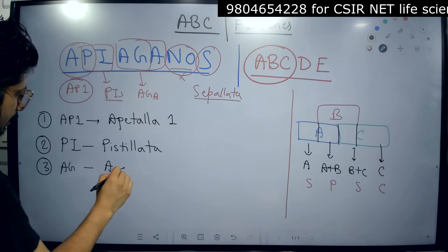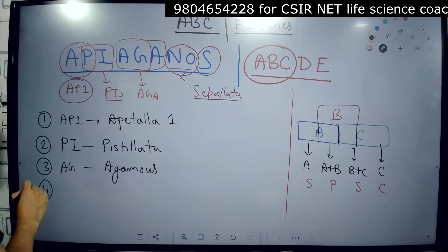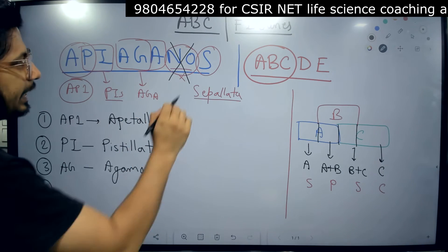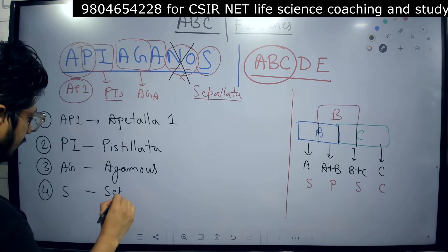The third one that we have is AG, that is Agamos gene. And the last one, the fourth one here, this one is NO, that means no gene is there. S for Sepallata.